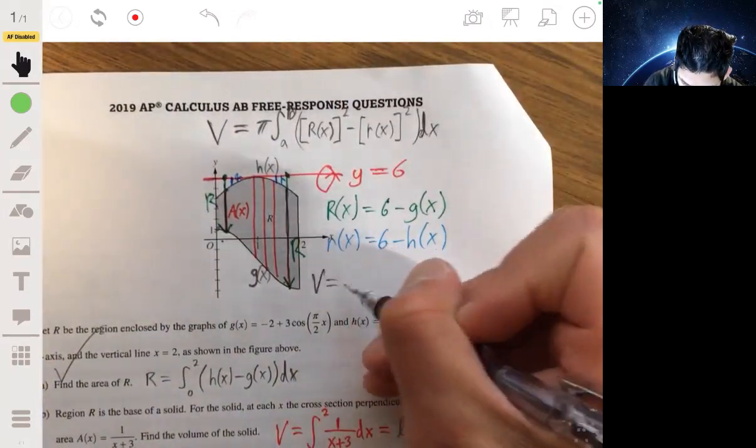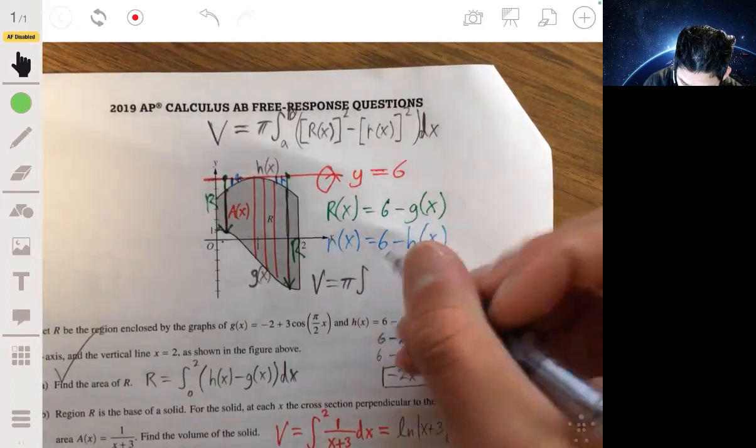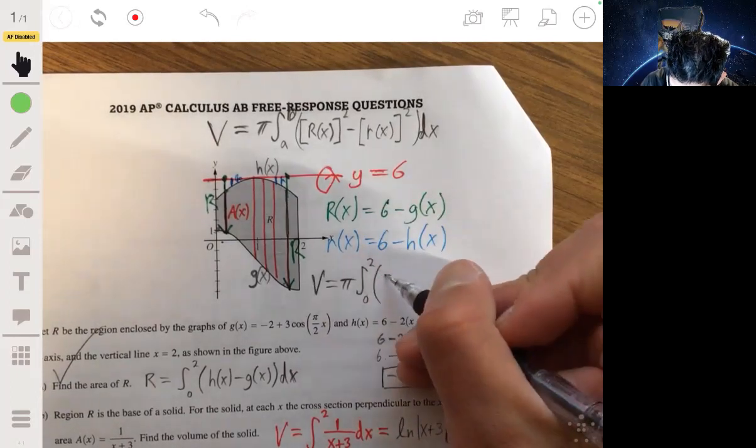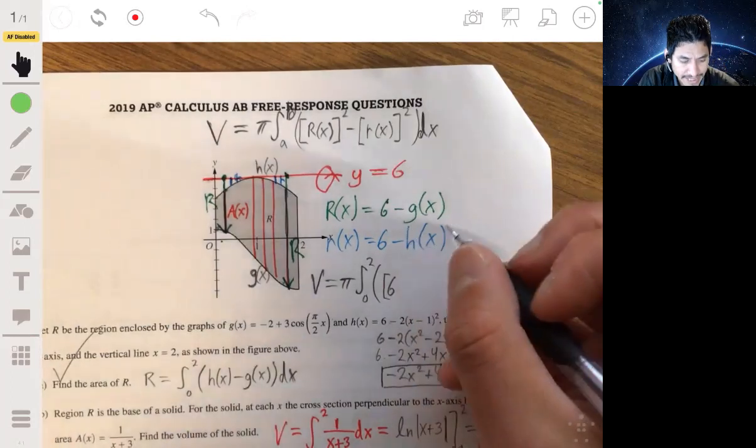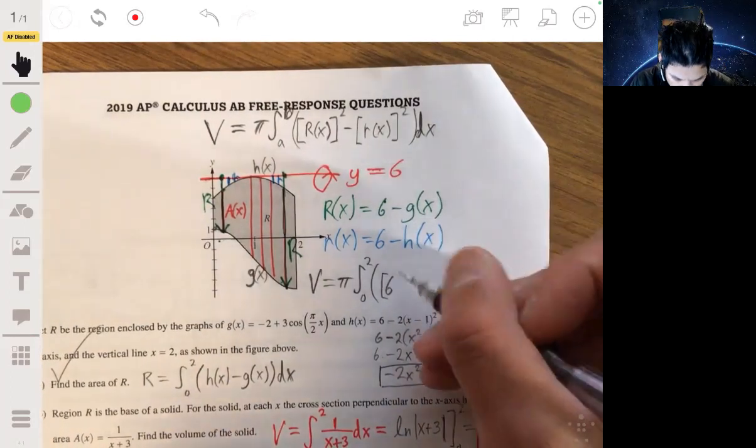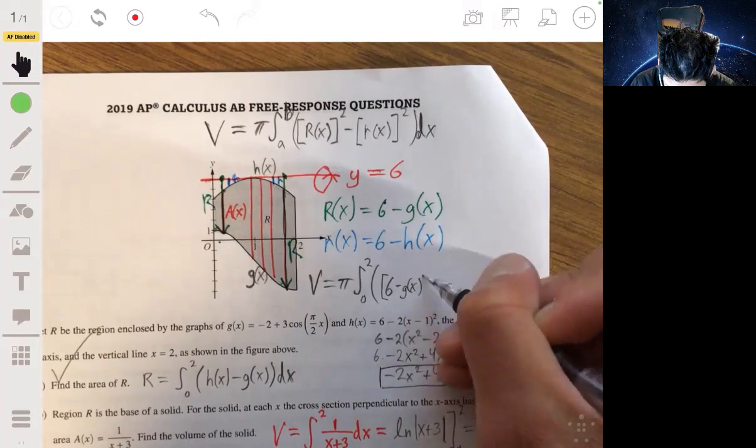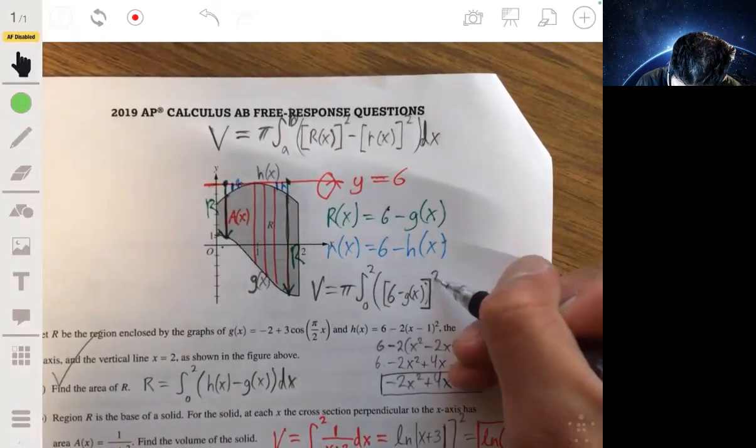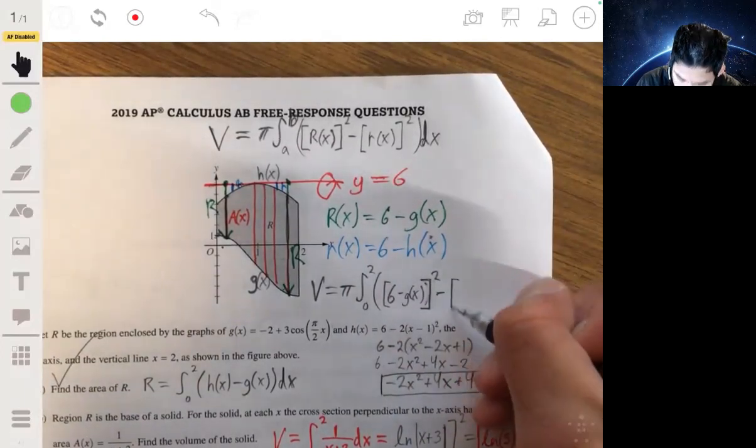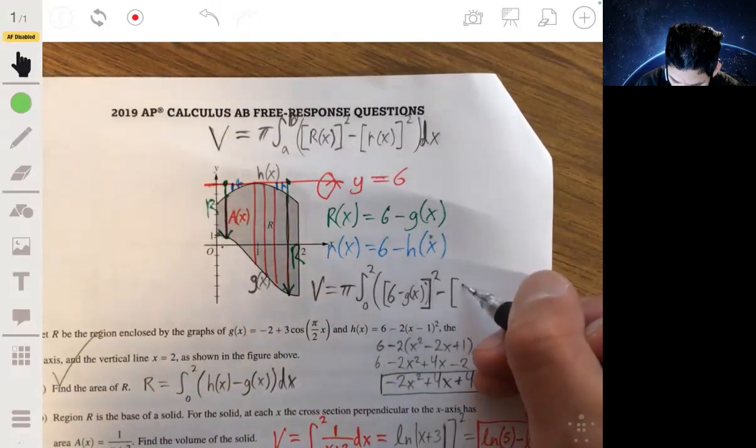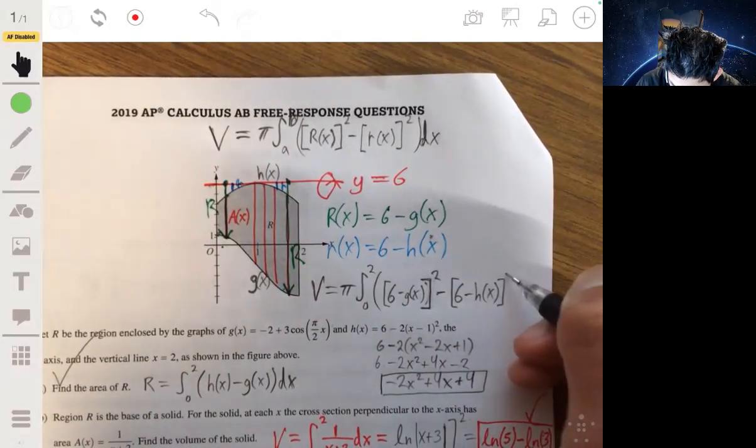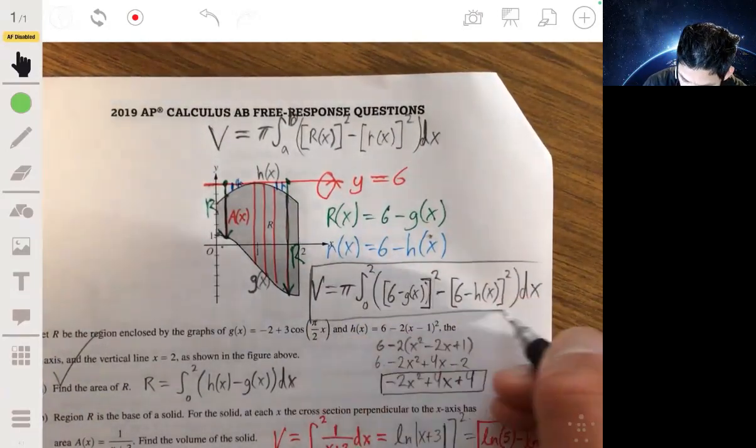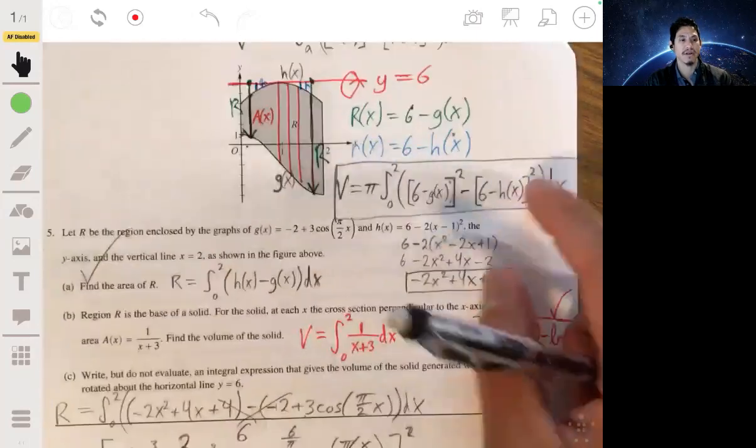So the equation for your volume would be equal to π times the integral from 0 to 2. Large r(x) squared, and you just put (6 - g(x))² minus (6 - h(x))². And this is just your answer. This is your solution for that. You don't have to solve it. They want to see that you know how to set this up.